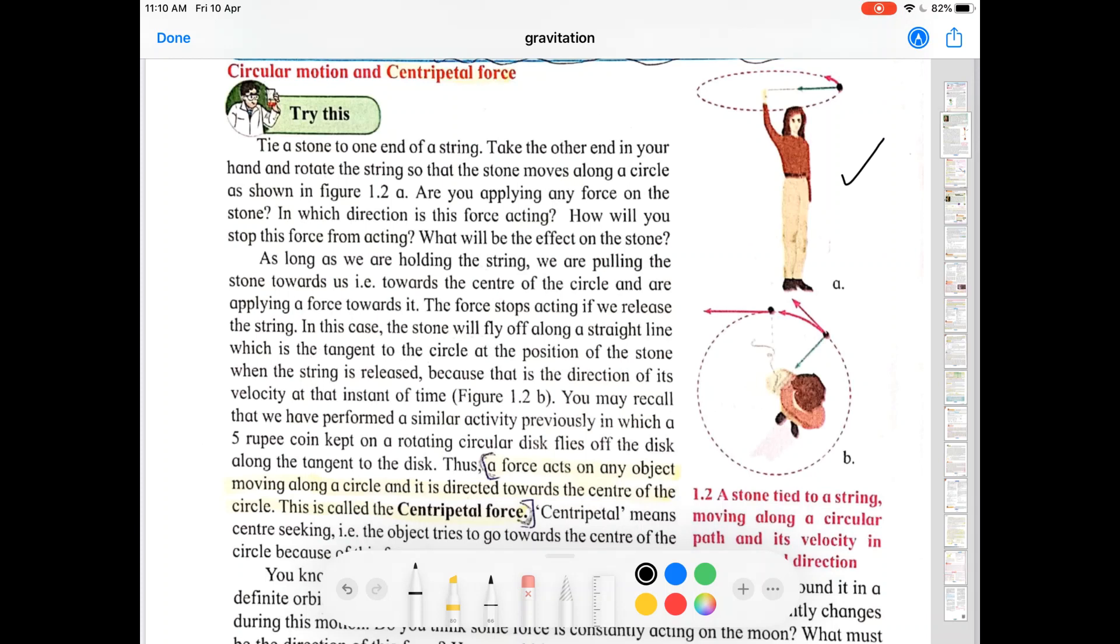This object performs uniform circular motion. We have studied in 9th standard that if an object performs circular motion and its velocity remains constant, then it is uniform circular motion.